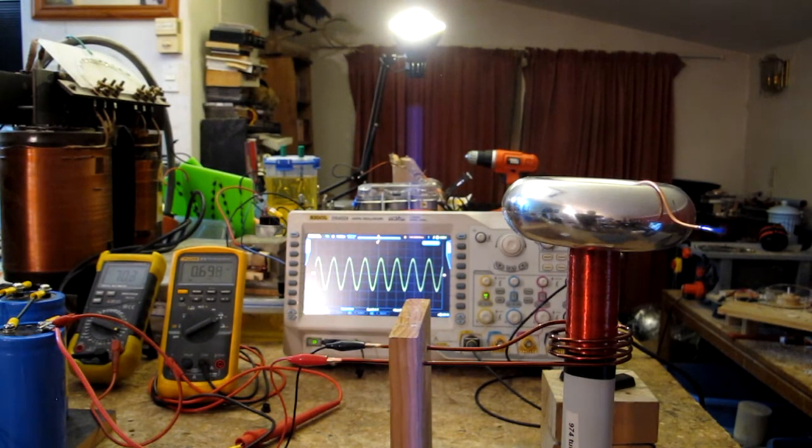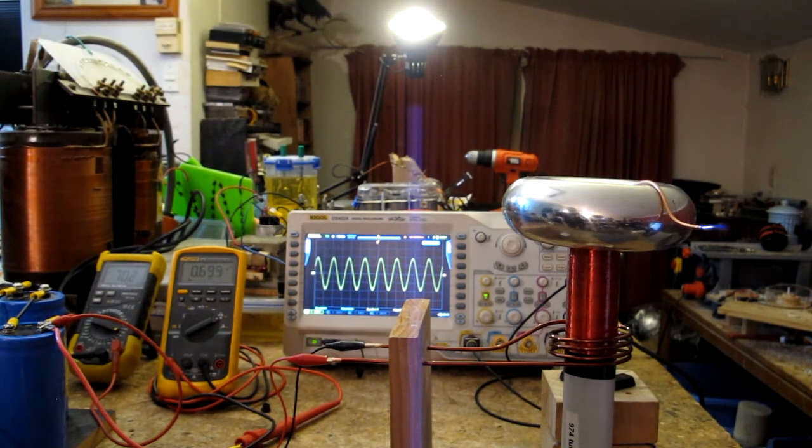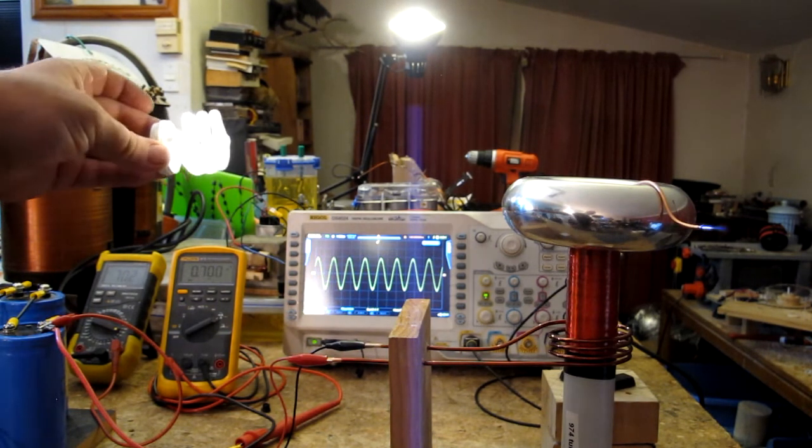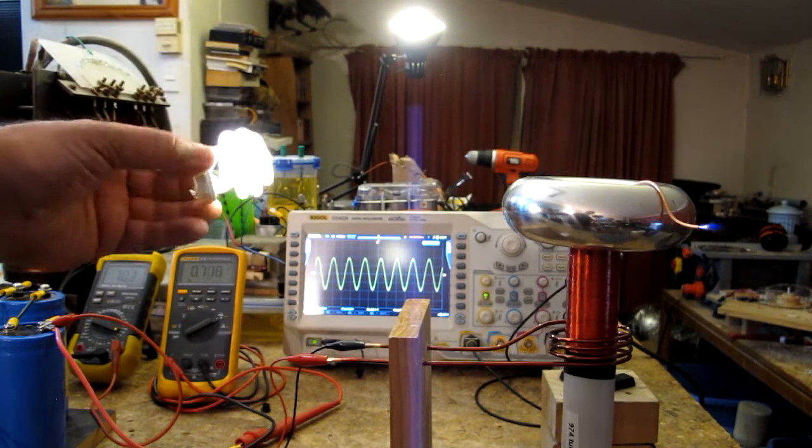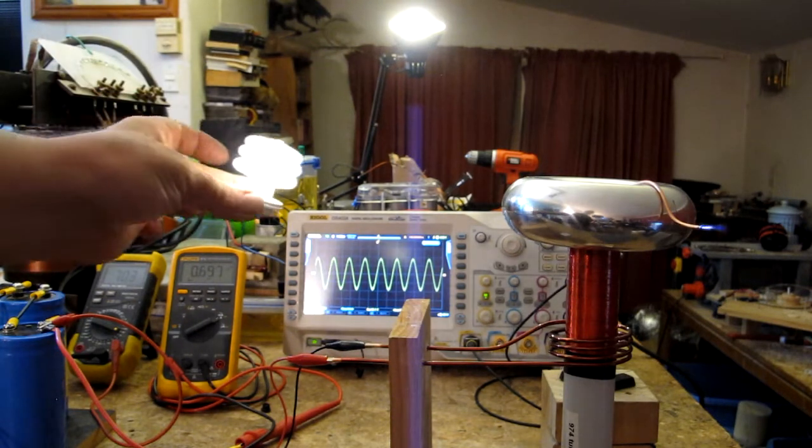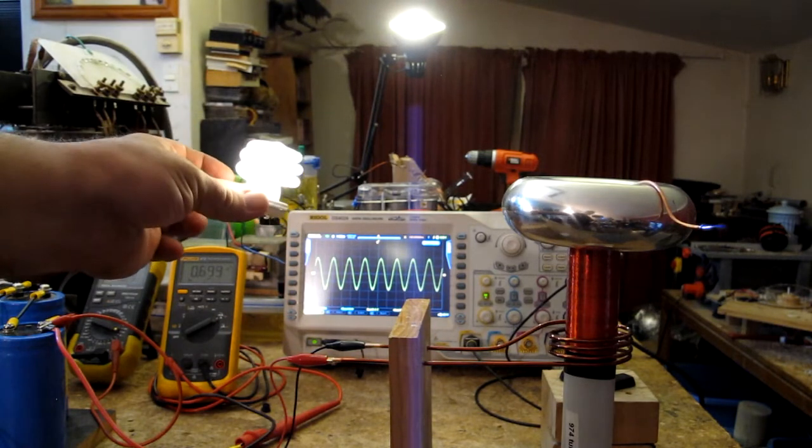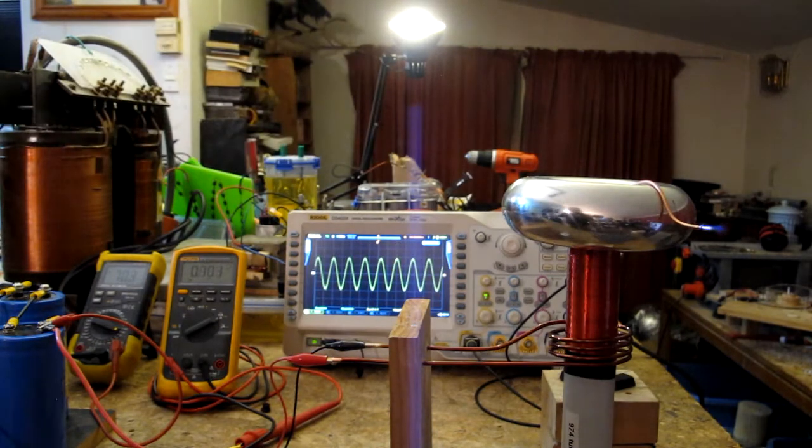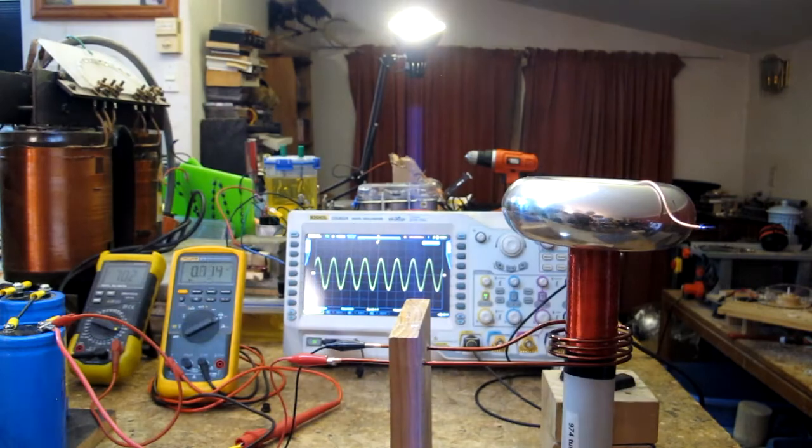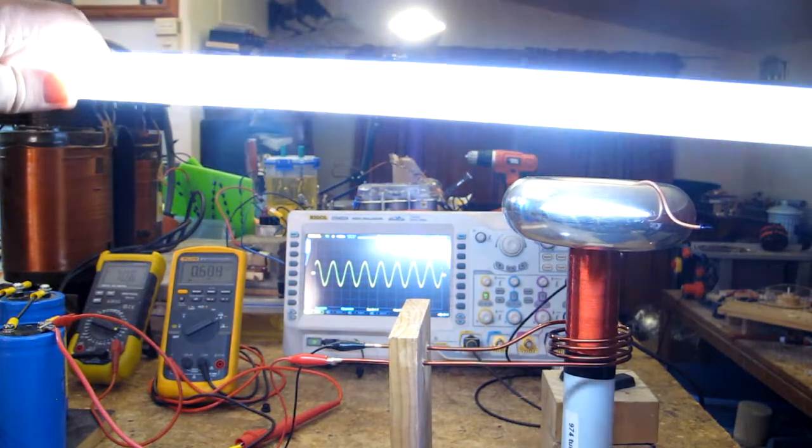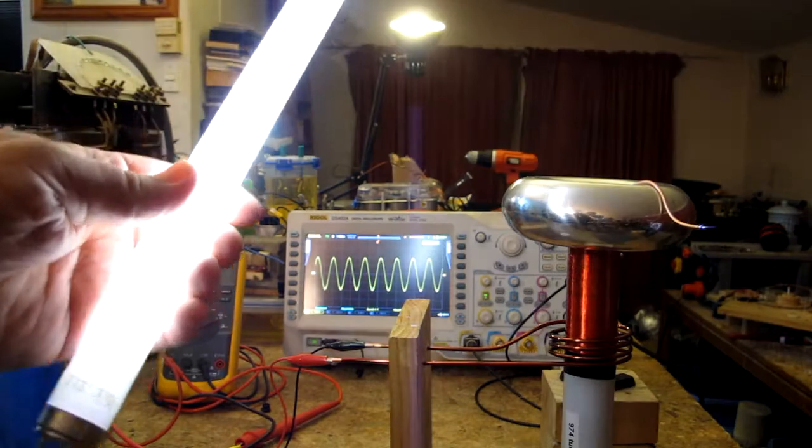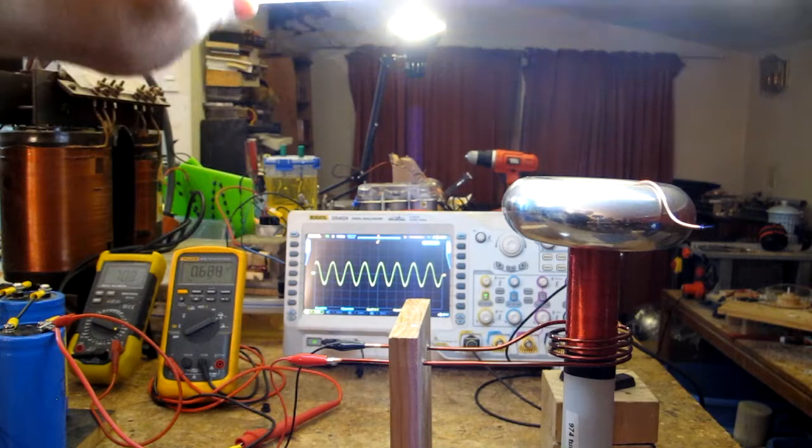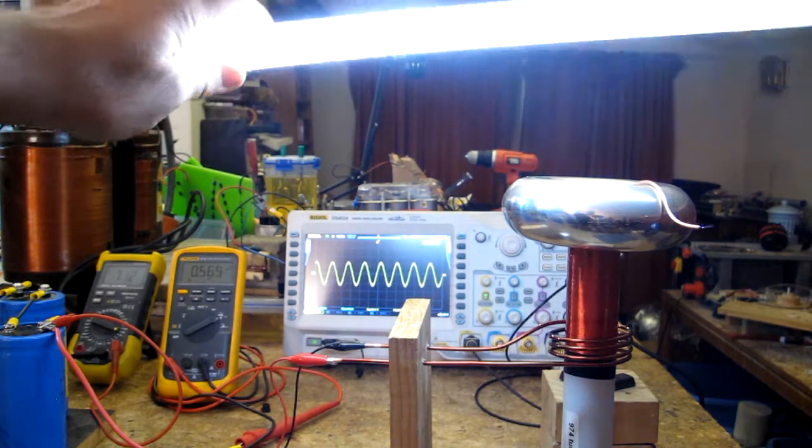So at about 70 volts in, it starts to get a bit of corona discharge off the breakout point there. It'll quite happily light up the CFL from about 15 centimeters away fully lit. It'll quite happily light up my big fluorescent, no problem at all. It actually starts to get a little bit warm in my hand where I'm touching it.